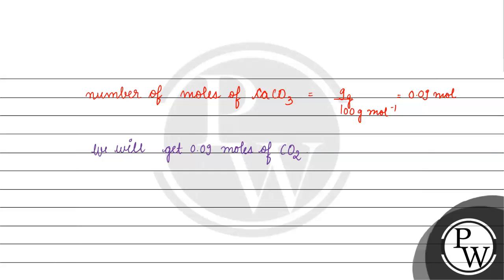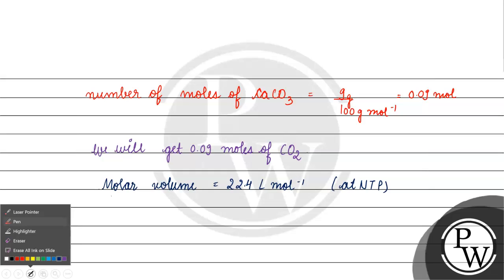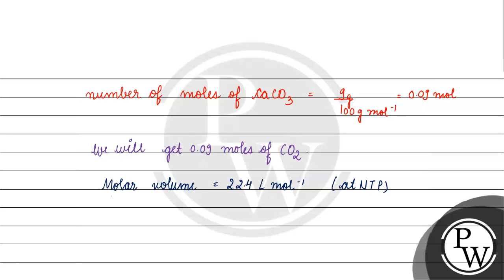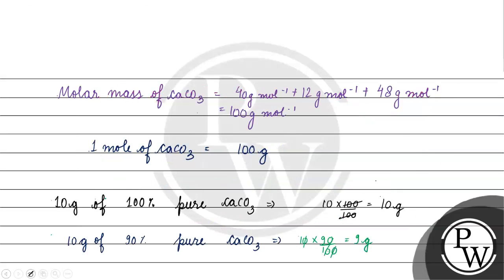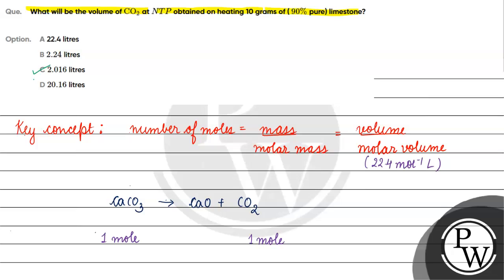Since 1 mole of any gas has a volume of 22.4 liters at NTP, 0.09 moles of CO₂ gas will have a volume of 0.09 × 22.4 = 2.016 liters. So the correct answer for this question is Option C. I hope you understood it well. Thank you and all the best.